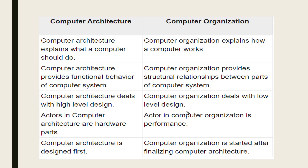There is a difference between computer architecture and computer organization. Computer architecture explains what a computer should do and how the computer works — it is the functional behavior and relationship between different parts: input, output, storage, and processing. It deals with high-level design.